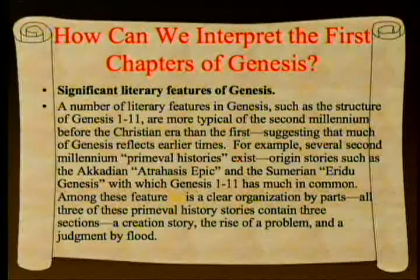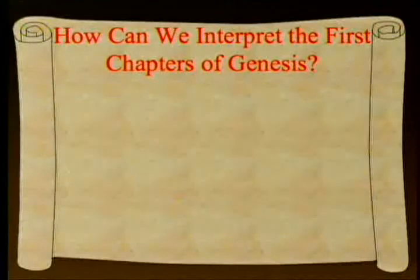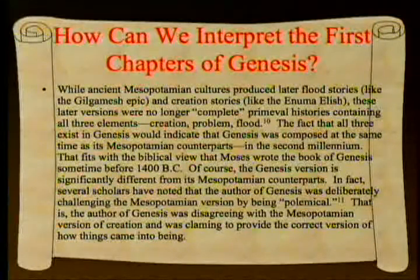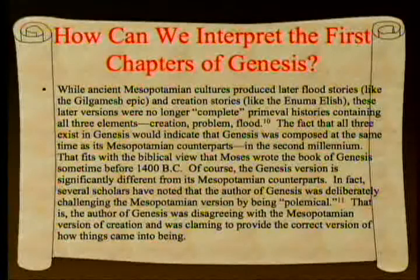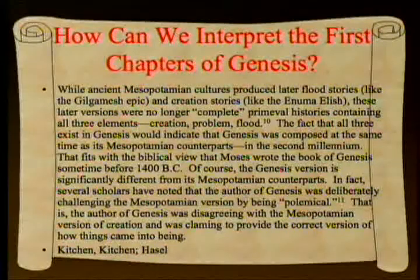Among these features is a clear organization by parts. All three of these primeval history stories contain three sections: a creation story, a rise of a problem, and a judgment by flood. While ancient Mesopotamian cultures produced later flood stories like the Gilgamesh epic and creation stories like the Enuma Elish, these later versions were no longer complete primeval histories containing all three elements. The fact that all three exist in Genesis would indicate it was composed at the same time as its Mesopotamian counterparts in the second millennium—fitting the biblical view that Moses wrote Genesis sometime before 1400 B.C.